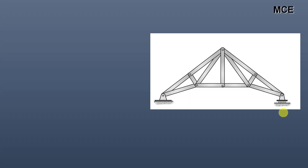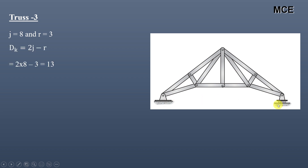For truss three, this truss has eight joints and three reactions — two at the pin end and one at the roller. The value of dk for this truss is 13, meaning this truss has 13 degrees of freedom.